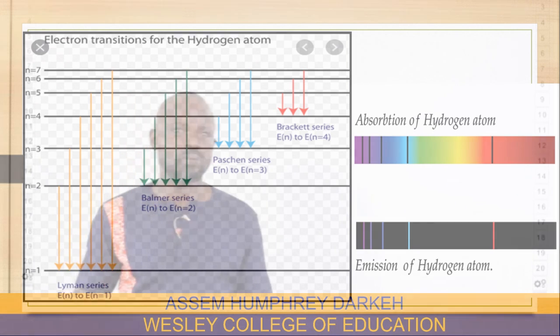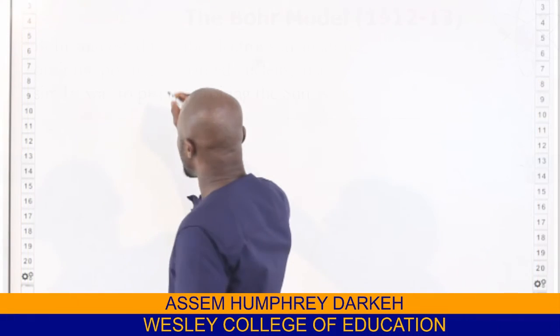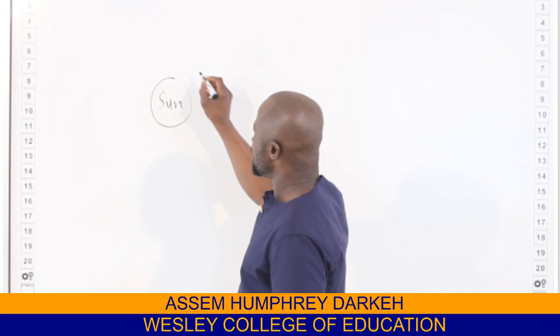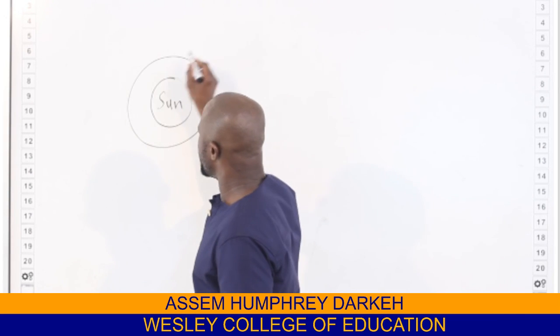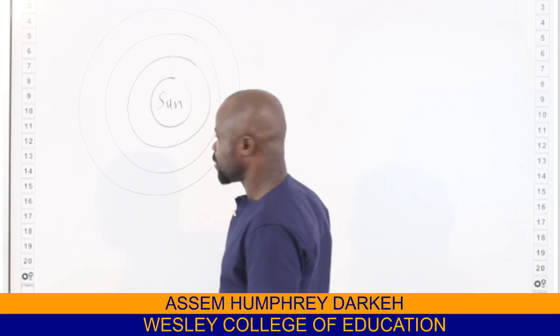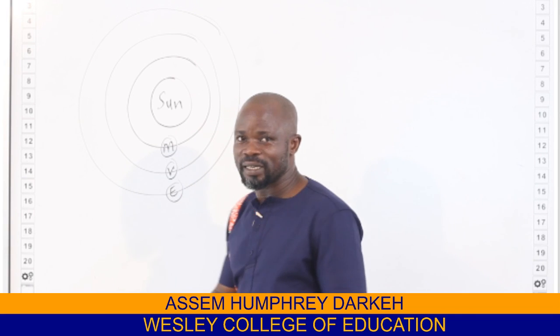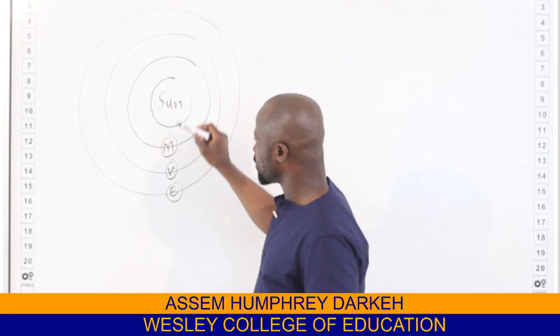We still recall that Bohr, from 1912 to 1913, suggested that the electrons in an atom orbit the positively charged nucleus in a similar way to planets orbiting the sun. Bohr made us aware that the solar system has the sun at the central point, surrounded by planets in various orbits. For the solar system model, we have the sun at the central point and around it are the various planets, just as for the first three planets in their respective orbits.